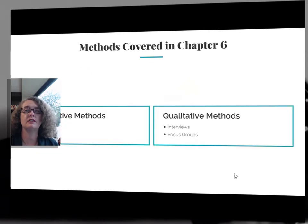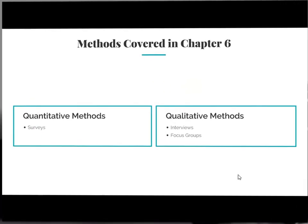Your textbook provides a detailed discussion of some of the key methods that can be used to collect quantitative and qualitative data. You can read selectively in this portion of the chapter, focusing on what's most relevant to your research. The textbook also provides a good discussion of sampling — in other words, how do you select the portion of the population you will study, whether you are using quantitative or qualitative methods?